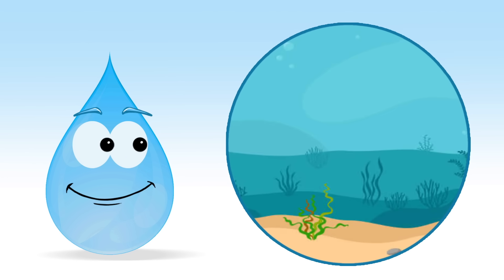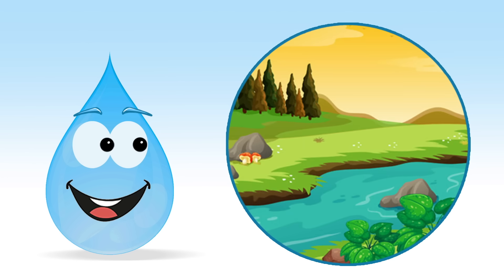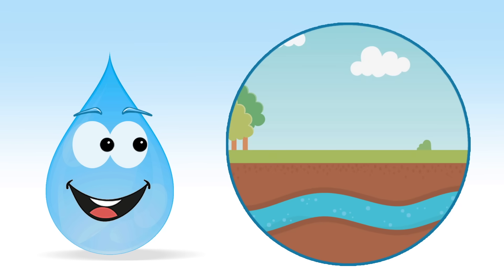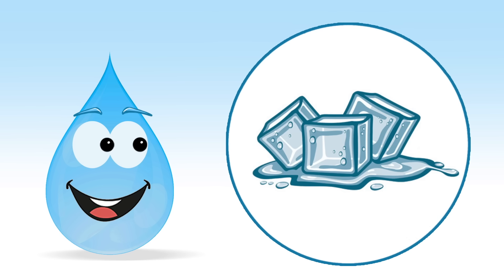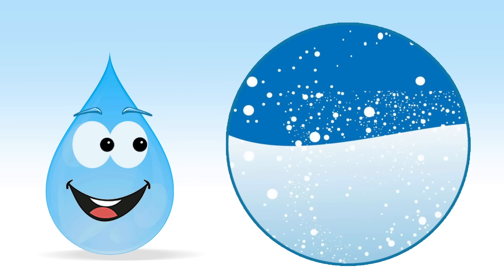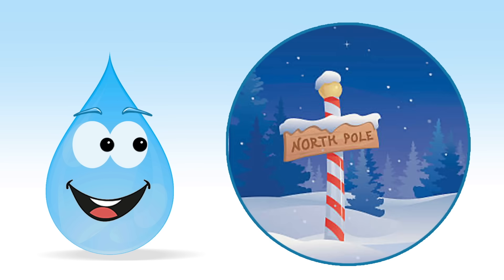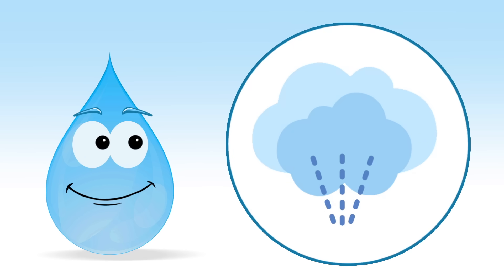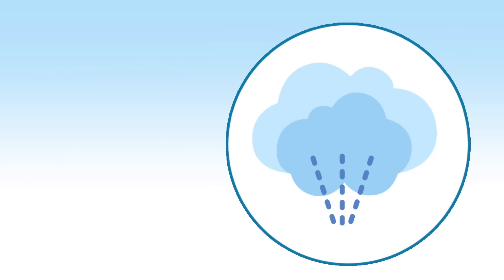Water in its liquid phase is found in oceans, rivers, lakes, and even underground. Solid water, or ice, is found in glaciers, snow, and at the north and south poles. Water vapor is a gas, and it is found in the Earth's atmosphere.